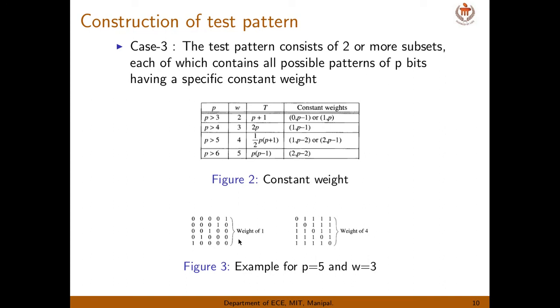That means in this, first five the constant weight will be 1. So you can see, if you see number of 1s will be 1. And next one P minus 1. So 5 minus 1 is 4. So total number of 1s in each row if you take, it is 4 number of 1s.